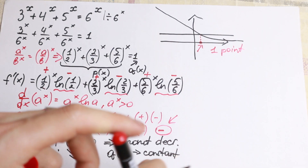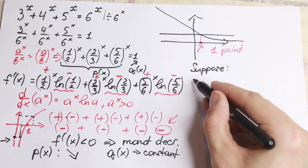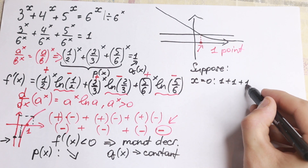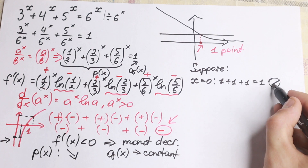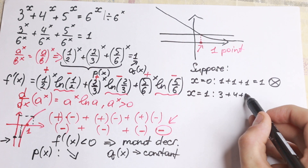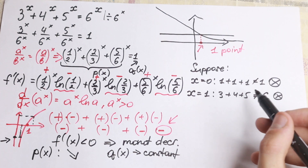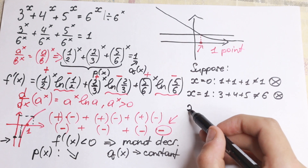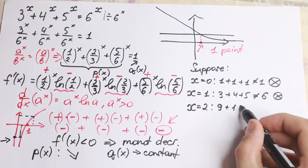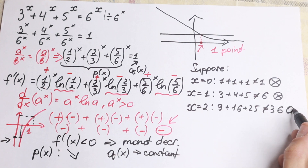Let's test some values. If x equals 0, we get 1 plus 1 plus 1 equal to 1, which is not correct. If x equals 1, we get 3 plus 4 plus 5 equal to 6, which is not correct. If x equals 2, we get 9 plus 16 plus 25 equal to 36, which is also not correct. So none of these roots work.